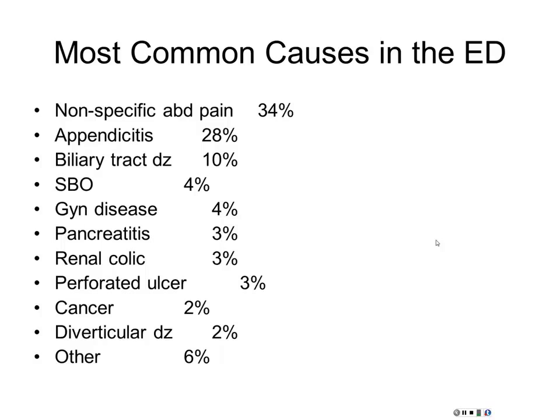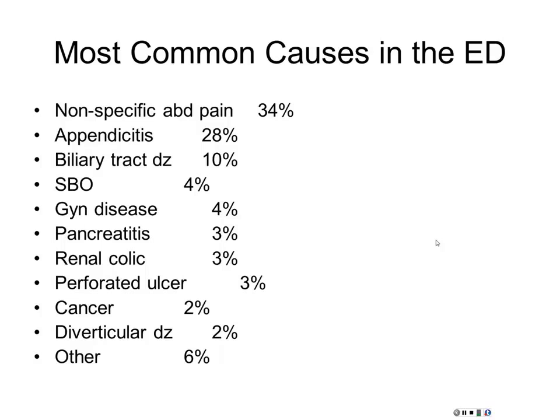What kind of tests should you order? It depends on what you're looking for. If you think someone has a perforation, get an upright chest x-ray and an acute abdominal series for obstruction — that will inform you more than anything. Start there. It's cheap and easy. Ultrasound is good for vascular pathology and biliary pathology, but not much else in the upper abdomen. In the lower abdomen it's good for pelvic pathology.